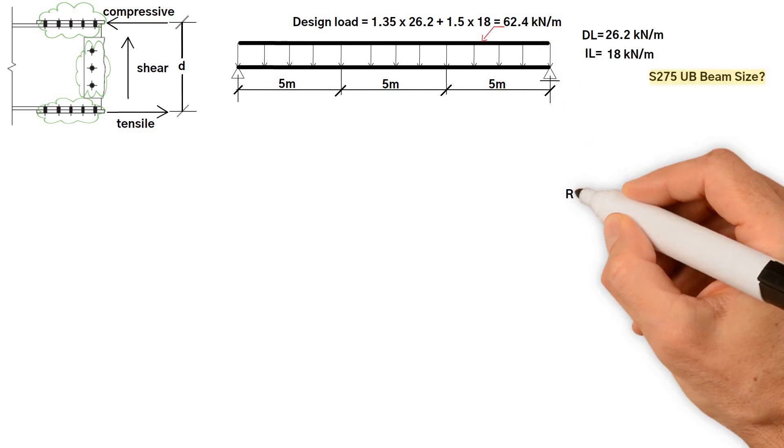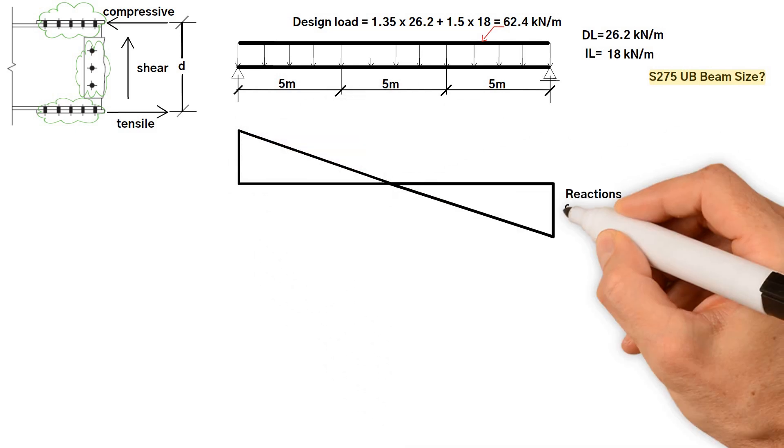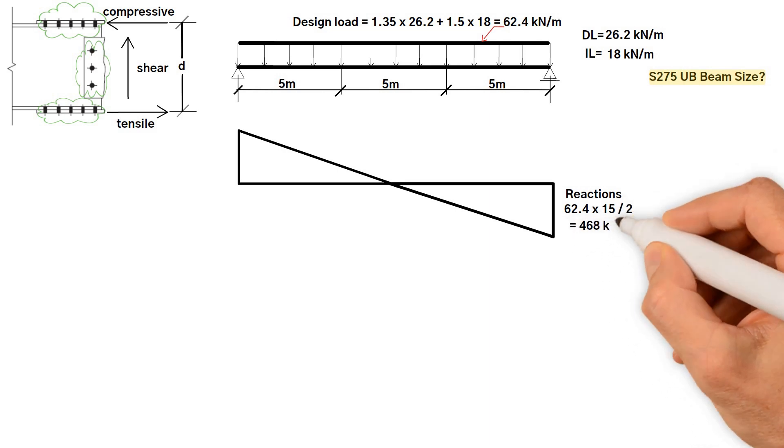Firstly, to work out the reactions, design load times half of the span which equals 62.4 times 15 over 2 equals 468 kN.